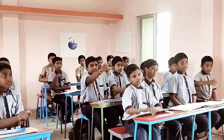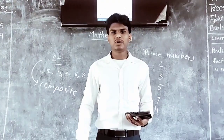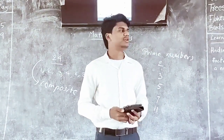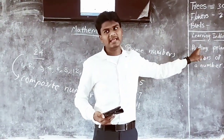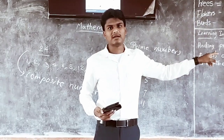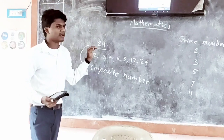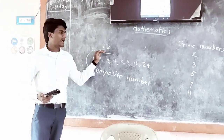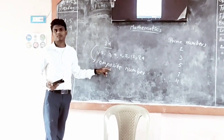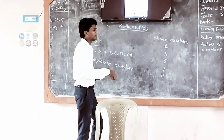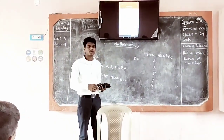How many of you understand? Show me your thumbs. Okay, very good. Today we are going to learn about finding prime factors of a number — of any number, whether it is a composite number or a prime number. For example, look at here. We have 24. Is it a composite number or a prime number? Composite number. Very good.